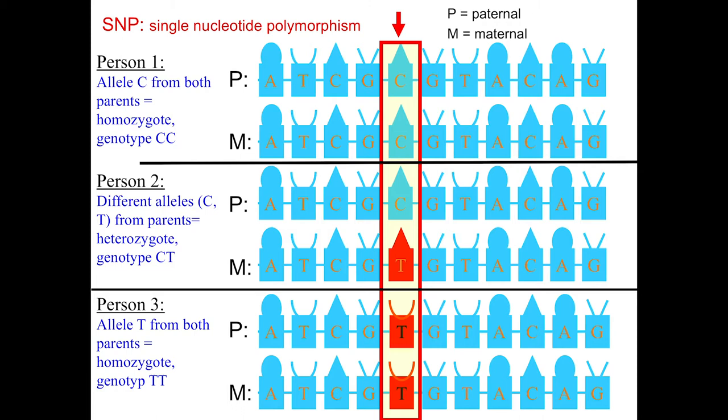This shows what single nucleotide polymorphisms look like. For example, one person received this sequence from their father and this sequence from their mother, and has CC at a particular position. Another person has CT, so different nucleotides, and a third person has TT. These are the kinds of genetic variants I'll be discussing today.